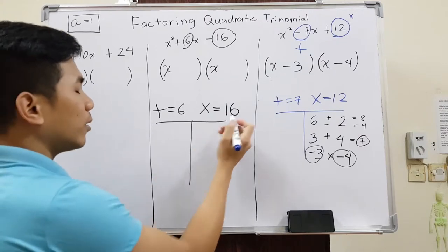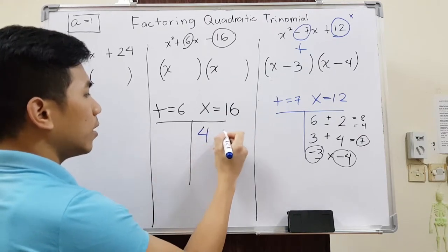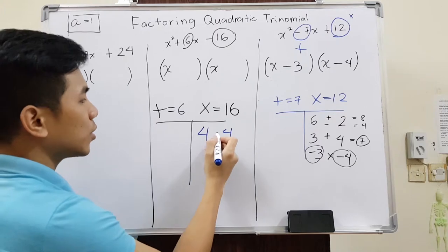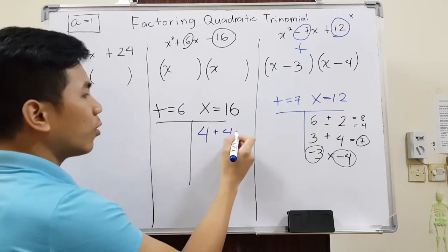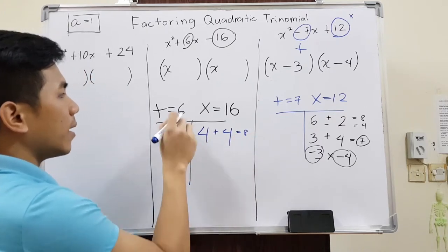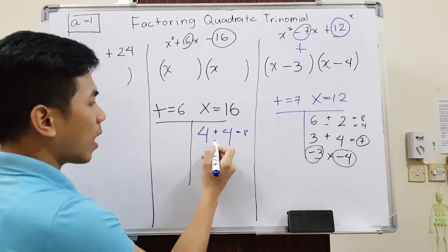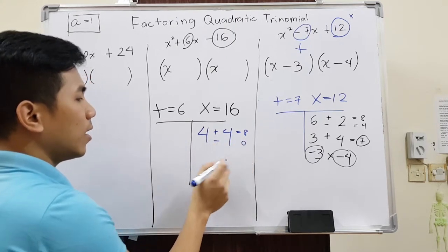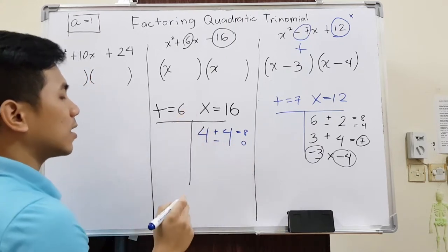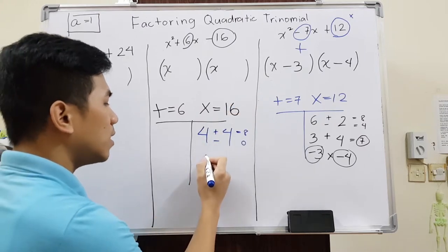Any numbers that multiply to 16, so 4 and 4. Again, ask yourself: 4 plus 4 is equivalent to 8, but I need 6, so it's not going to work. How about 4 minus 4? That is 0. It is also not going to work because we need 6. So maybe we should think of some other factors of 16.